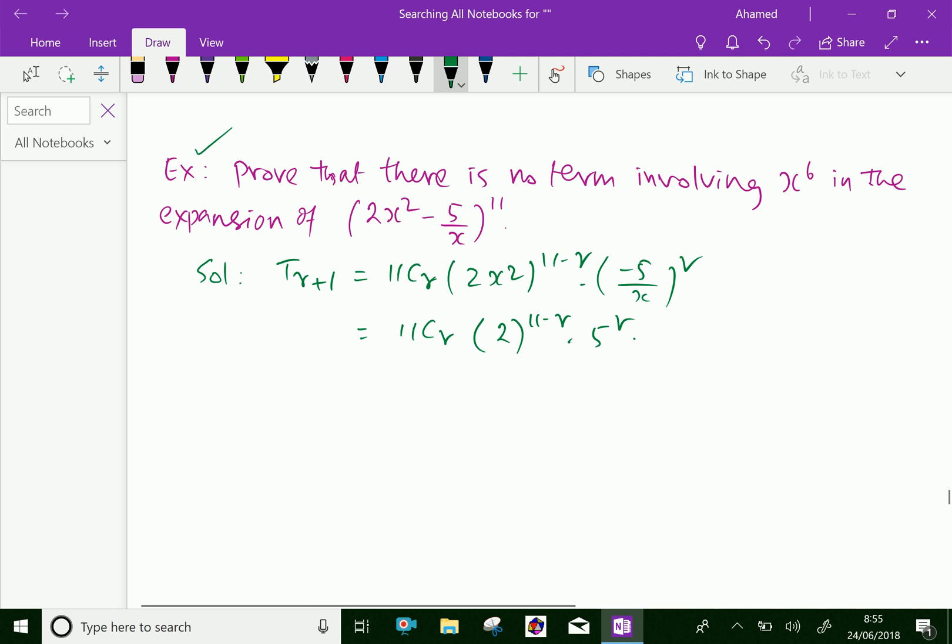And the x terms are x raised to 2 times 11, that is 22, then minus 3r. Because 2 into 11 is 22, and x is raised to power 3r in the denominator.